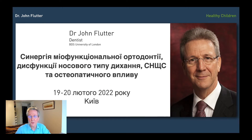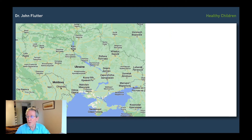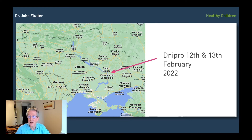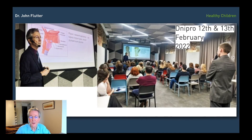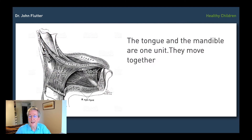I was explaining this to a group of orthodontists that I was speaking to recently on my trip to the Ukraine, when we drove from Kiev down to Dnipro to deliver a lecture to a large group of Ukrainian orthodontists. What I wanted to try and do was to get people to understand that the tongue and the mandible are a single unit — they move together. Wherever the tongue goes, the lower jaw goes, and wherever the lower jaw goes, the tongue will go.